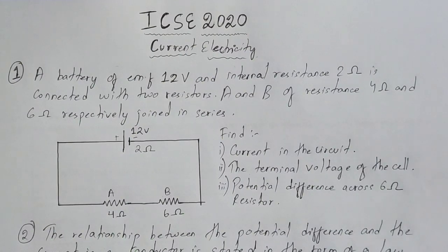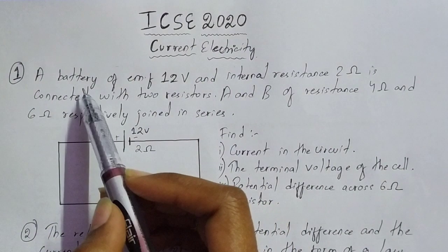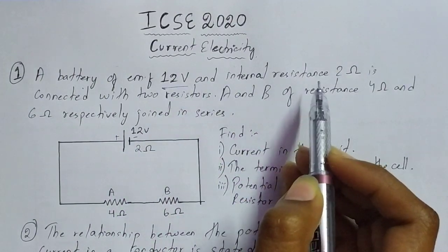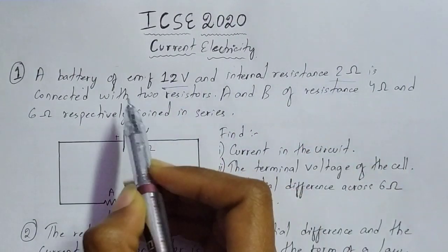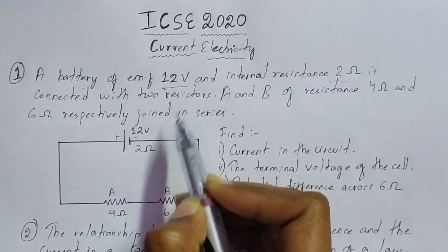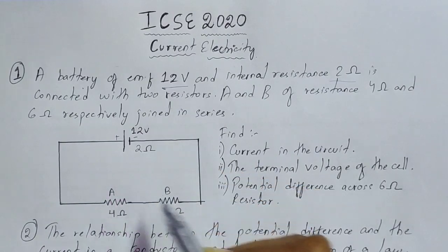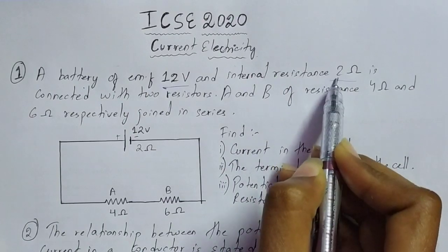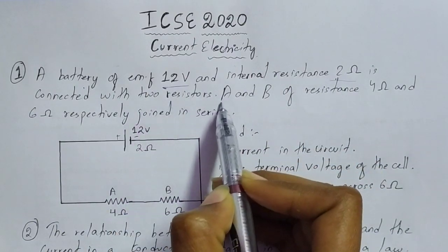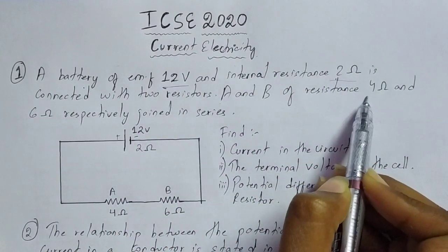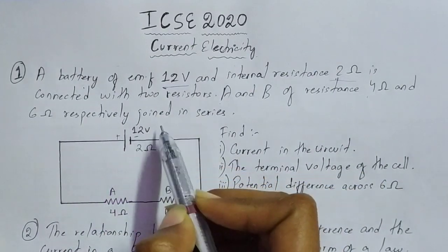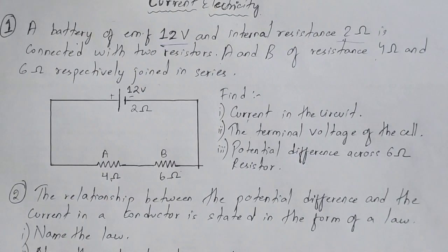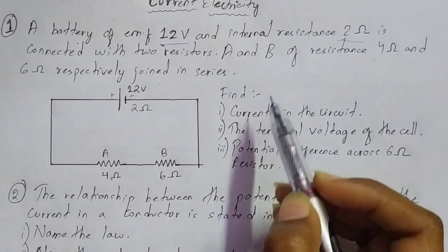Starting with the first question: a battery of EMF 12 volt and internal resistance 2 ohm is connected with two resistors. There are two resistors and the internal resistance is 2 ohm. Resistors A and B have resistance 4 ohm and 6 ohm respectively, joined in series.